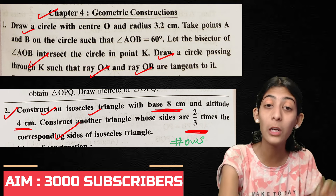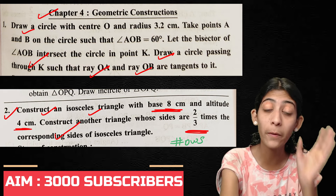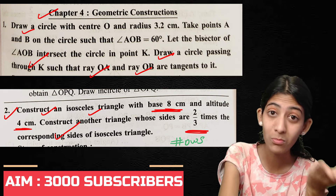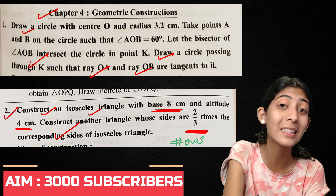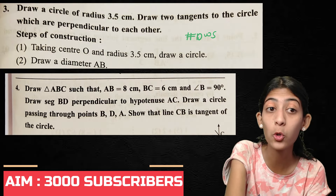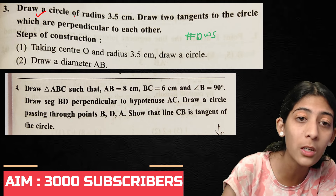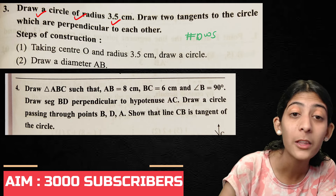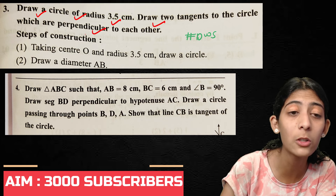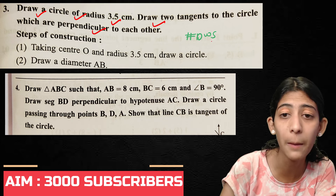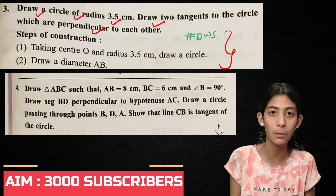Take photos or screenshots of whatever you need. But take the solutions and try to solve them, because as easy as it looks, it is not easy. Third question: Draw a circle of radius 3.5 cm and draw two tangents to the circle which are perpendicular to each other.